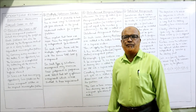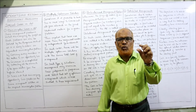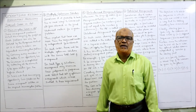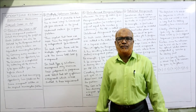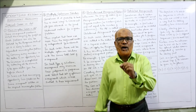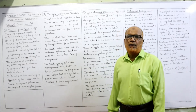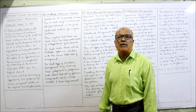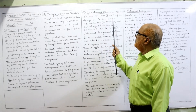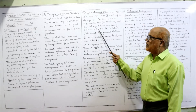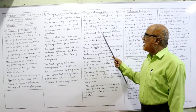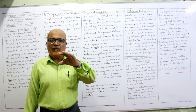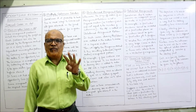The next special case is the unbalanced problem. An assignment problem is balanced when the number of rows and number of columns are equal — that means the number of resources and number of activities are the same. For example, if five persons and five jobs are there, it is a balanced problem with a square matrix. But if the number of rows and columns are not equal, it is called an unbalanced problem. Whenever an AP is unbalanced, a dummy row or dummy column has to be created. If only four rows and five columns exist, we include one dummy row.